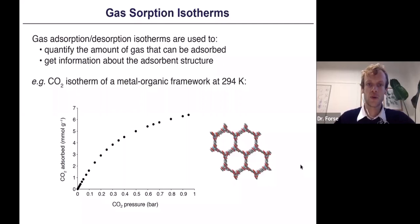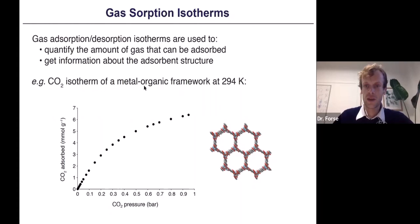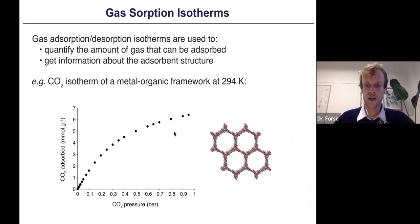Before getting to the NMR, how do people normally characterize these adsorbents? Gas adsorption measurements are standard: we quantify the amount of gas adsorbed by the material at different pressures, where pressure is the driving force for adsorption. For a metal-organic framework, you can see the CO2 isotherm near room temperature, which tells you the quantity of gas adsorbed under different conditions, and sometimes gives information about adsorbent structure. However, this data is a little lacking in information — it doesn't tell you much about how CO2 is adsorbing, how it's moving, or how it's binding. We'd like to address this gap with NMR spectroscopy.